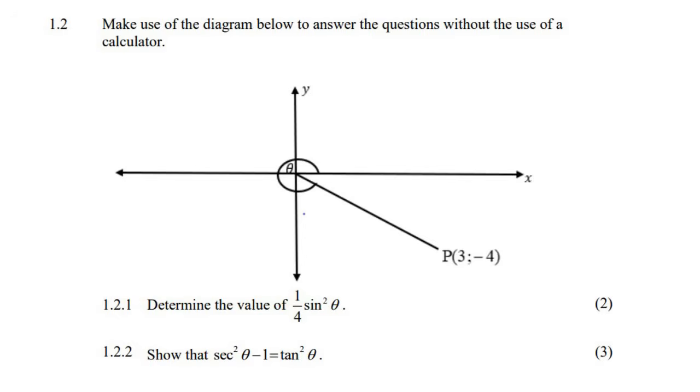So remember, when you get a diagram like this, always make the triangle, this part, go towards the x-axis. Always make it go towards the x-axis. Don't ever let it go towards the y-axis. So if you did this, that would be wrong. So you're going to go that way.